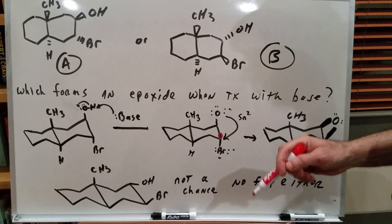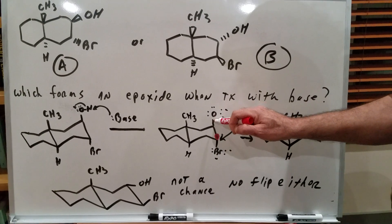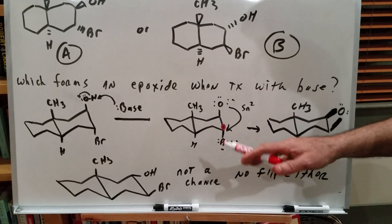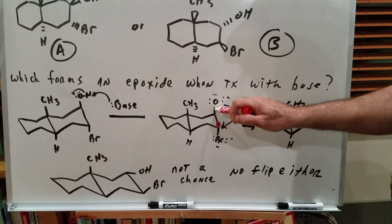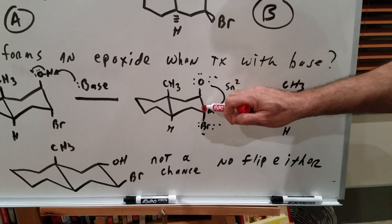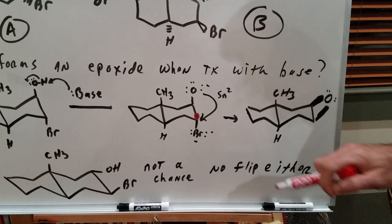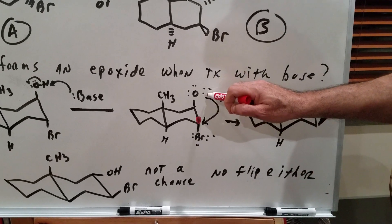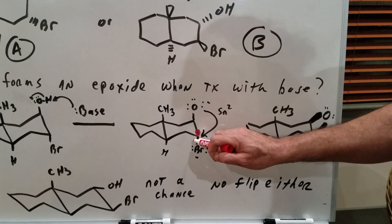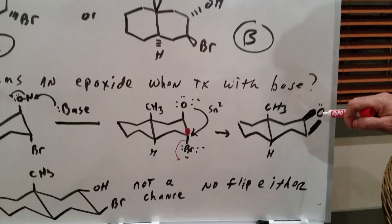Now if you took a base and the base removed the acidic proton, you generate the nucleophile. Whenever you do an SN2 reaction — which is necessitated here because we're forming an epoxide — you're coming in from the backside. So that means to come in from the backside, the two groups have got to be 180 degrees apart. In plain English, the groups have both got to be in the axial position. As you can see, this is axial and this is axial.